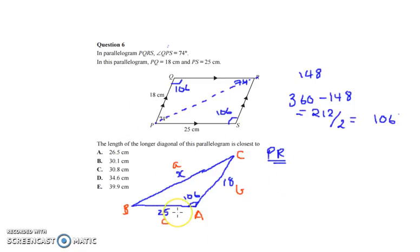So do we have any pair of information? No, we don't. So it's not the sine rule. We've got the angle and the two sides. So we're using cosine rule.